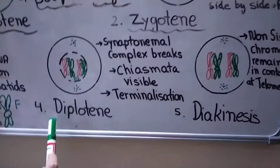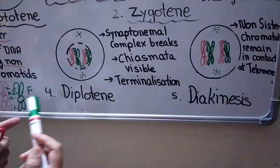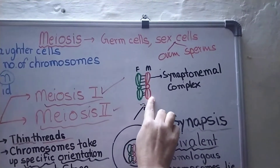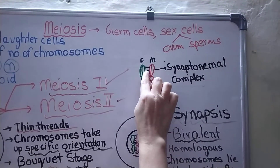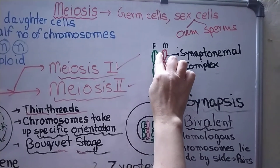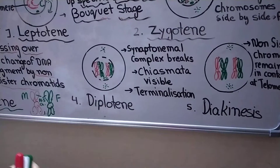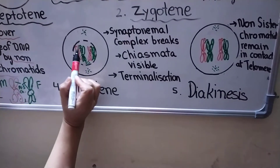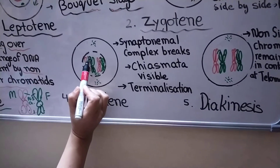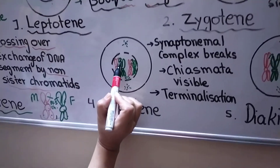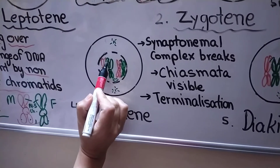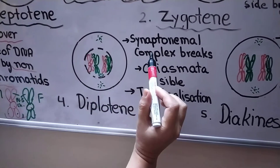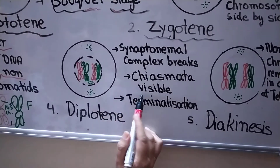Now coming to the fourth stage, that is diplotene. In diplotene, the synaptonemal complex which was formed between the two homologous chromosomes starts to break down. The chromosomes stay together at only one point — where their crossing over has taken place. That point is called chiasma — this is the point where actual crossing over has taken place. The rest of the synaptonemal complex breaks down, and chiasmata becomes very prominent in this stage.